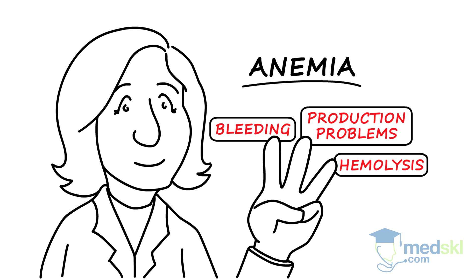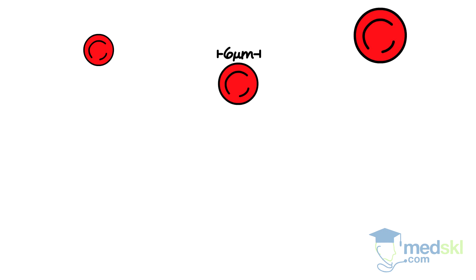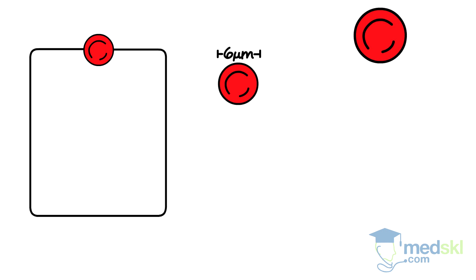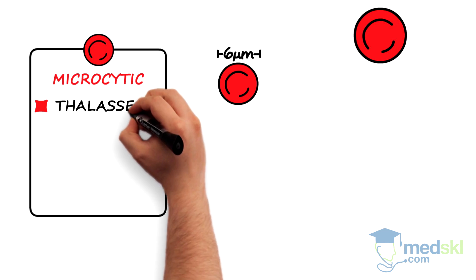Hospitalized or complex patients may have multifactorial anemia with a combination of the above processes. Anemia can also be classified by red cell size. Microcytic anemia can be due to thalassemia,